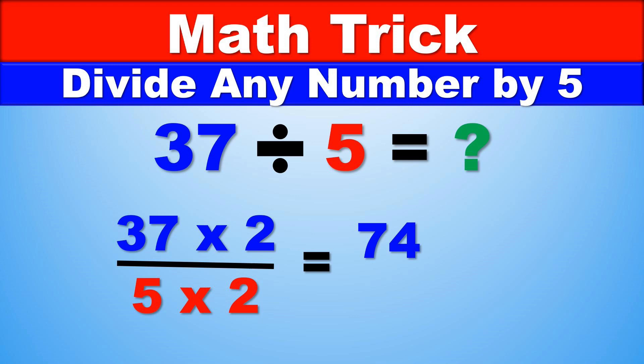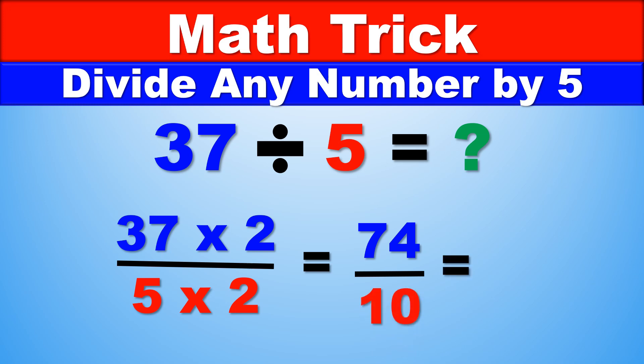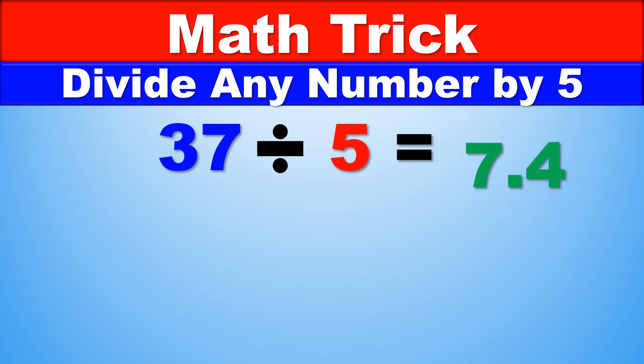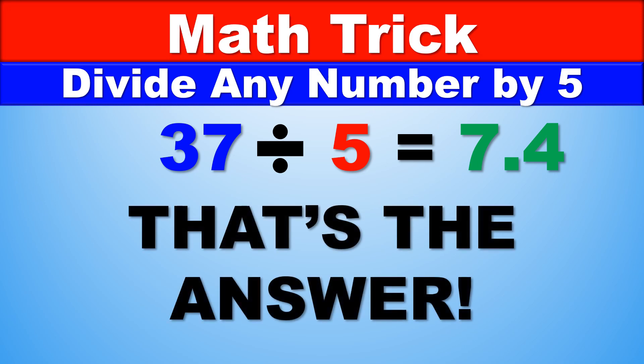37 times 2 is 74. And the next thing that we are going to do is divide by 10. And 74 divided by 10 is 7.4. And that is the answer right here.